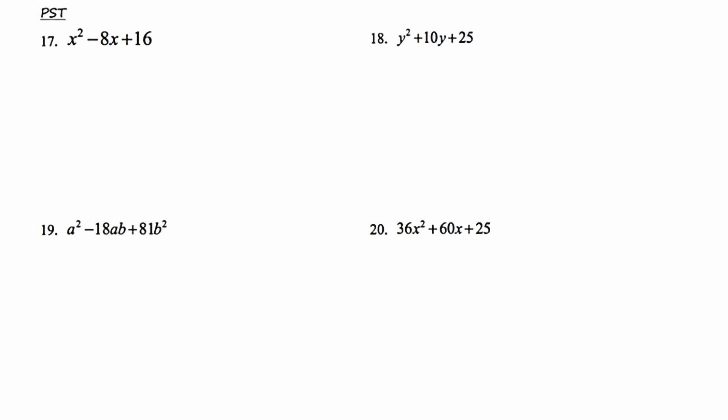In this slide we're going to discuss the Perfect Square Trinomial, or PST. A perfect square trinomial is a trinomial in which the first and last terms are perfect squares — meaning I can take the square root of them. There's one other condition: the last term has to be positive. Looking at all four problems, the last term is positive in each. If the last term is not positive, it's not a perfect square trinomial. To factor it, I'm going to set up a binomial that will be squared, and I'll do a test.